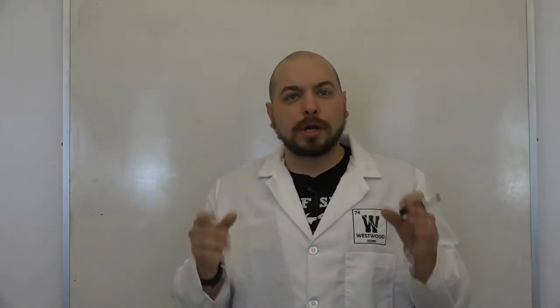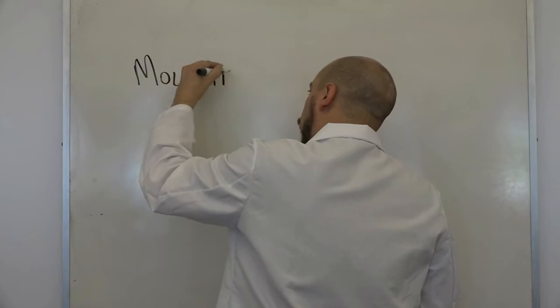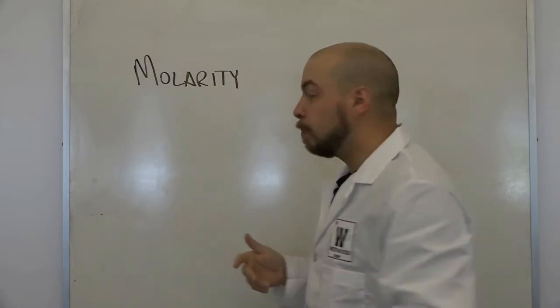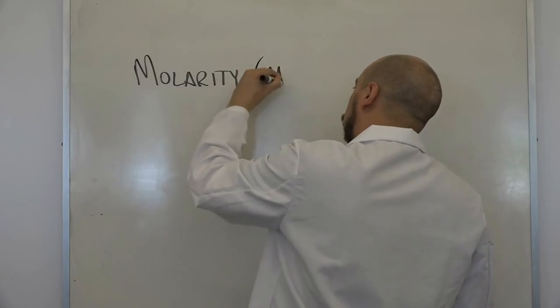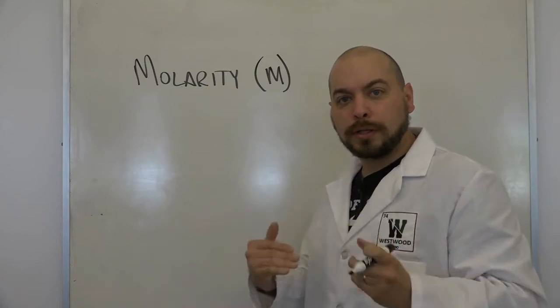So when we're looking at concentration, the unit that we care about most often is called molarity. Molarity is represented with a capital M and is equal to the number of moles per liter.